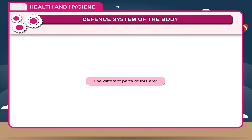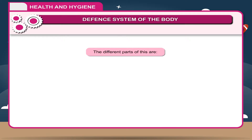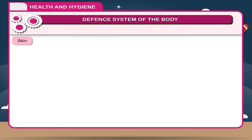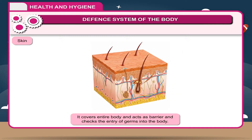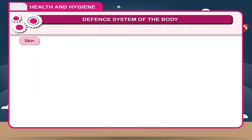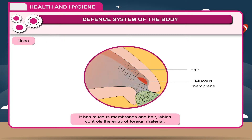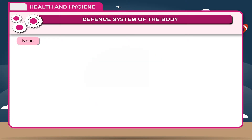The different parts of this defense system are: Skin — it covers the entire body and acts as a barrier, checking the entry of germs into the body. Nose — it has mucous membranes and hair which control the entry of foreign material.